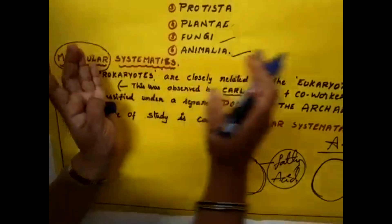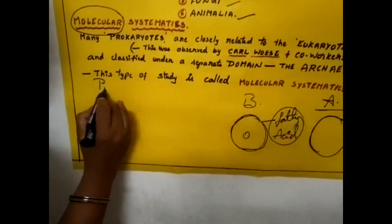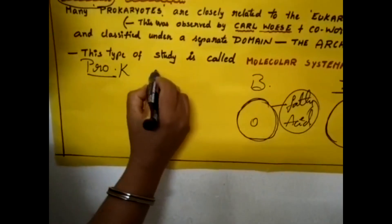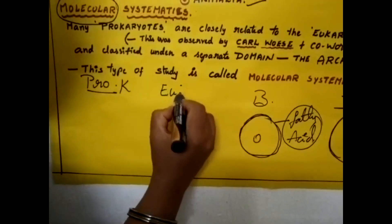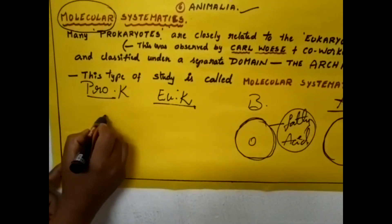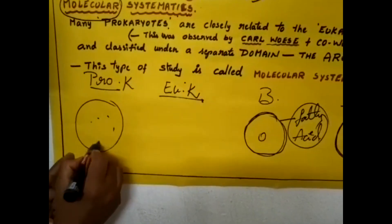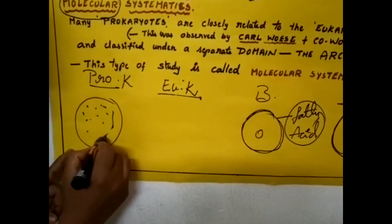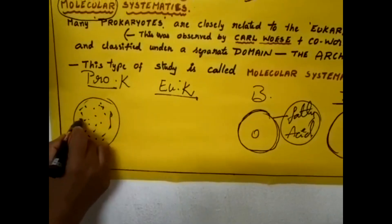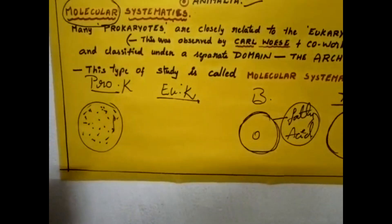What is the difference between prokaryotes and eukaryotes? Let us see. In prokaryotes, all cell organelles are present in the cytoplasm without being bound by any nuclear membrane.